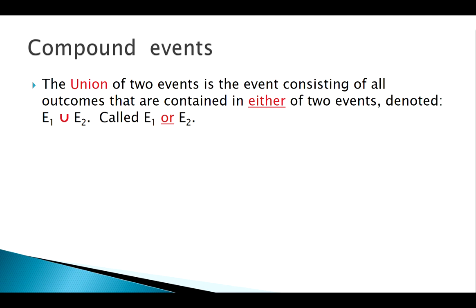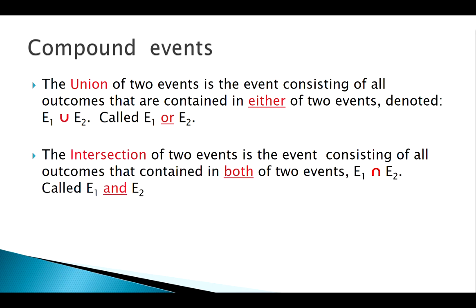Remember the key word with the union is 'or,' and the symbol — easy to remember — it's that U. The other type of compound event we might look for is our intersection. The key word there is 'and,' and the symbol is that upside-down U. We're going to start with unions because I think unions are a little bit easier to understand.